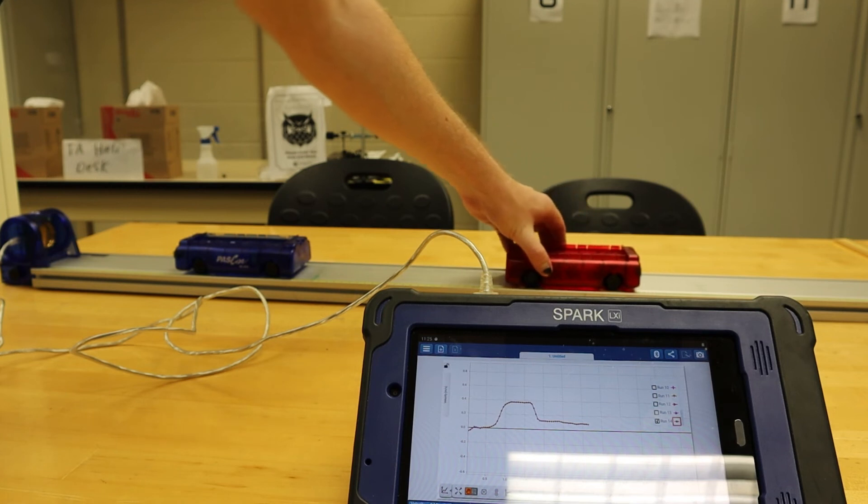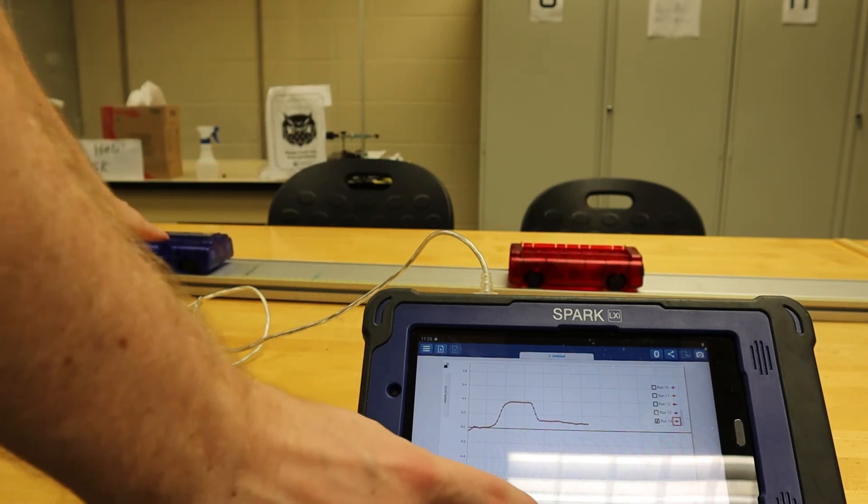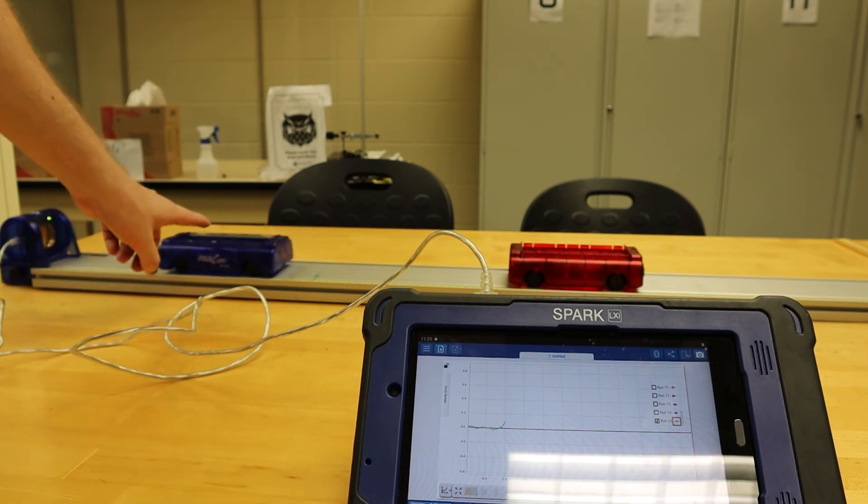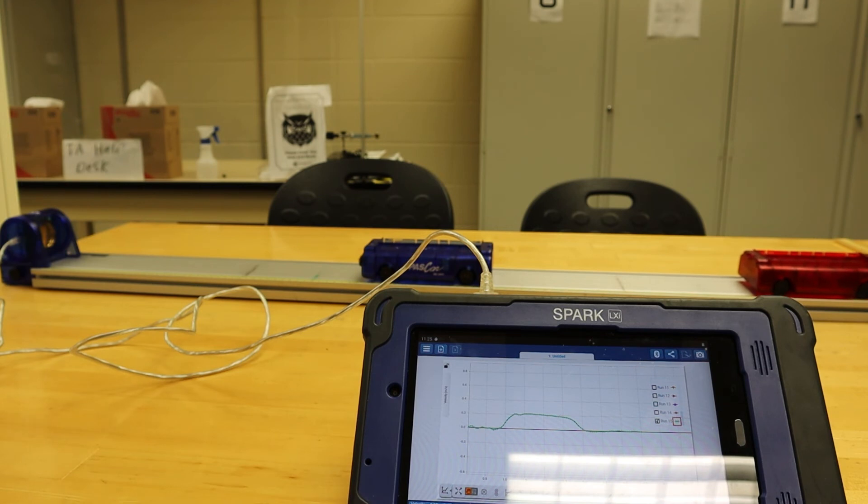Just like in Procedure B, once we have both of the passcars set up, we will press start on the LXI and gently push the blue passcar into the red, and then press stop on our dataset.